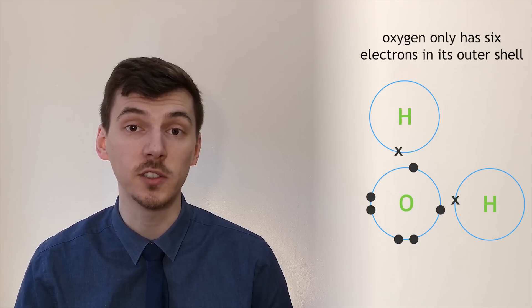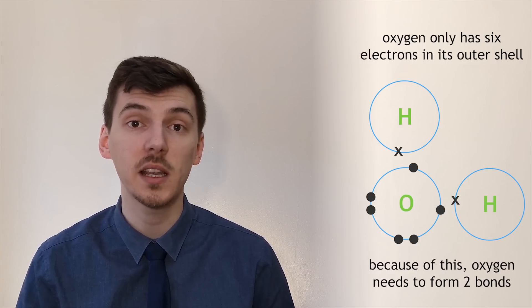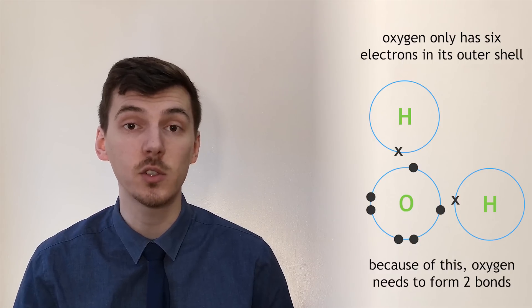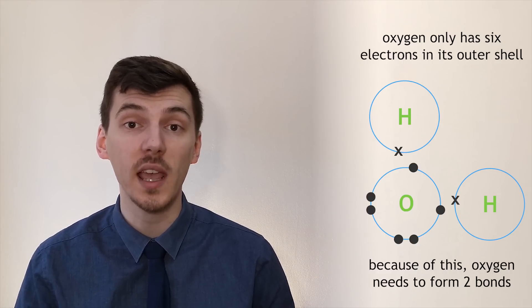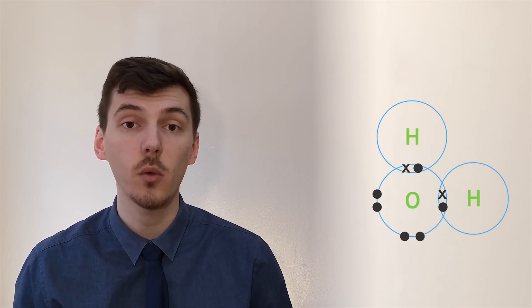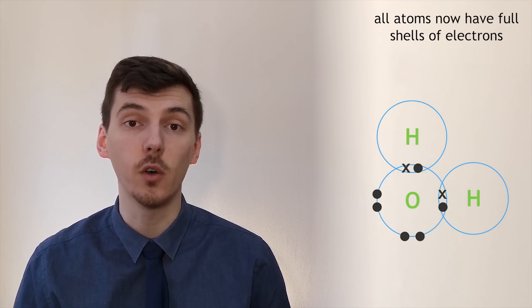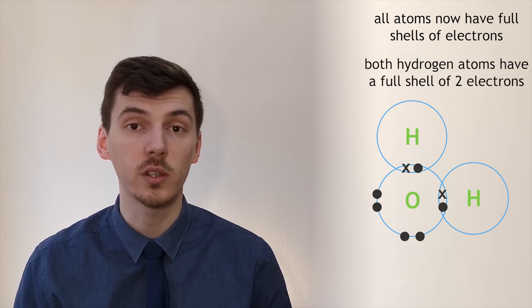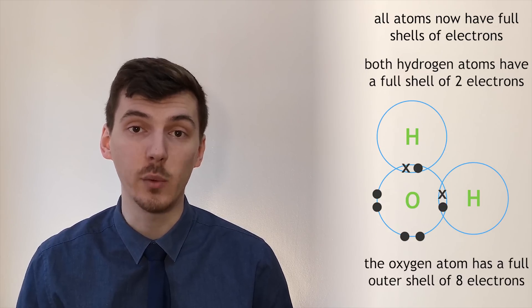Oxygen has only got six electrons in its outer shell. That means it needs to gain two more to become stable. It can gain those two electrons by forming one bond with each of the different hydrogen atoms. If we draw this as a dot and cross diagram, we can now see that all of the atoms involved have full outer shells of electrons: each hydrogen with two and oxygen now with eight.